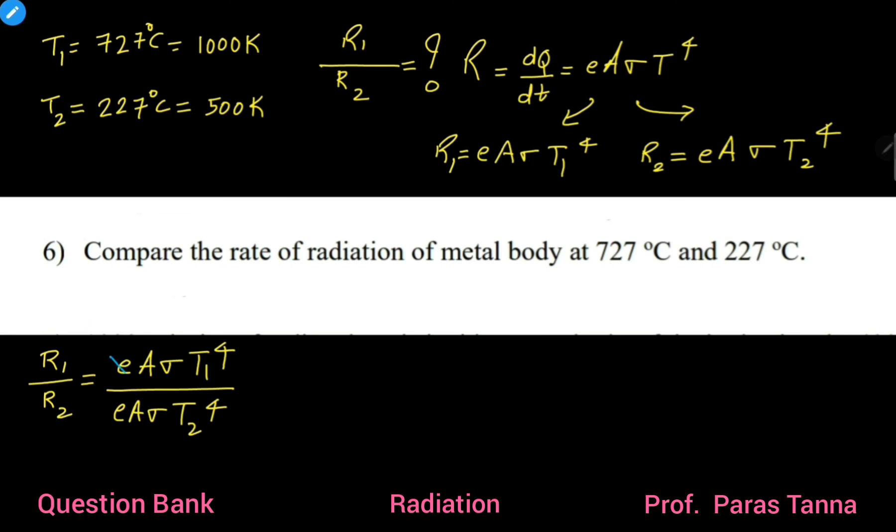Now students, coefficient of emission E gets cancelled, surface area gets cancelled, Stephen's constant sigma also gets cancelled. So, we are getting R1 divided by R2 equals T1 divided by T2,